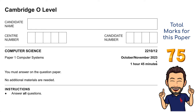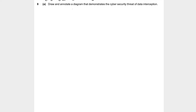Here we go. It's 2210/12 for paper 1 from October-November. Question 8: Draw and annotate a diagram that demonstrates a cyber security threat of data interception.